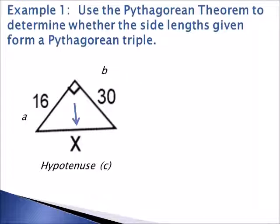It does not matter if you label 16 as a or 16 as b due to the fact that you are adding the legs together and the commutative property holds.